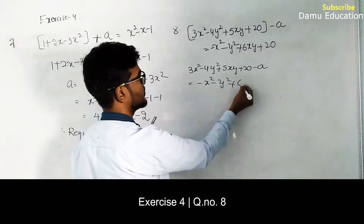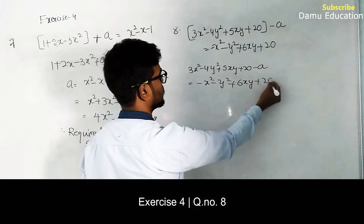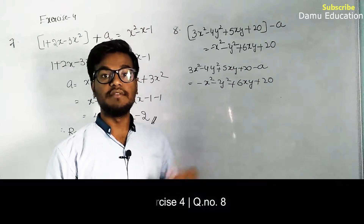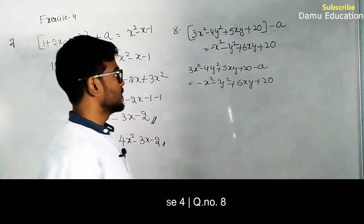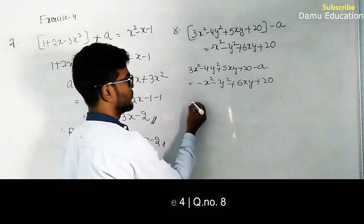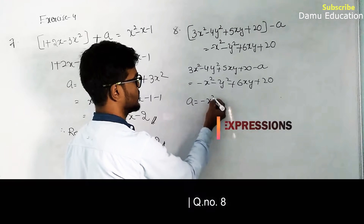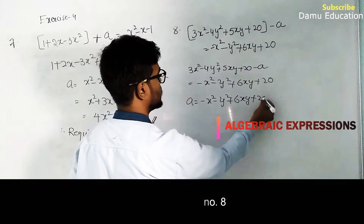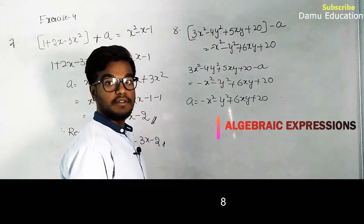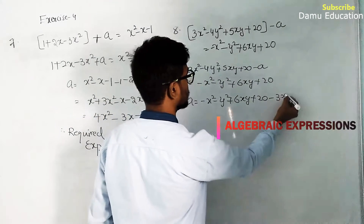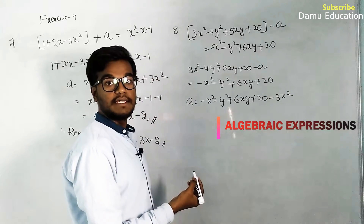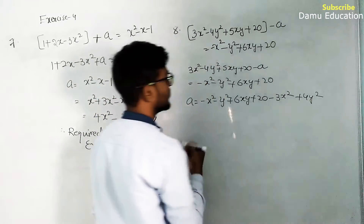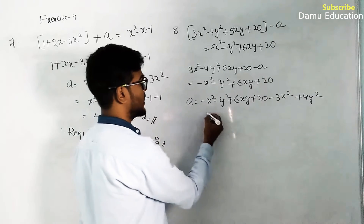We shift the remaining terms to the right side to get the required term a. So a = (-x² - y² + 6xy + 20) - (3x² - 4y² + 5xy + 20). This gives: -x² - 3x² = -4x², -y² + 4y² = +3y², and +6xy - 5xy = +xy, and +20 - 20 cancels.